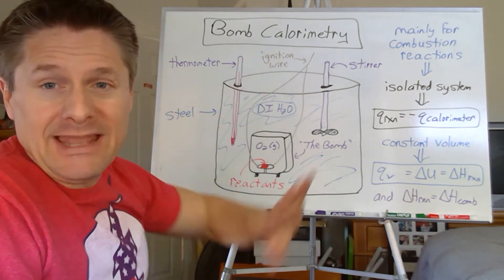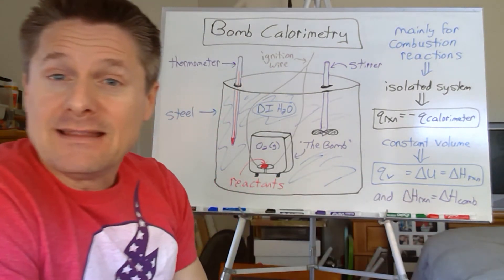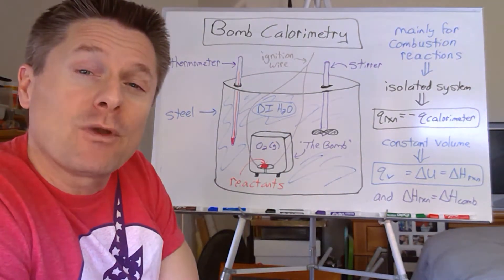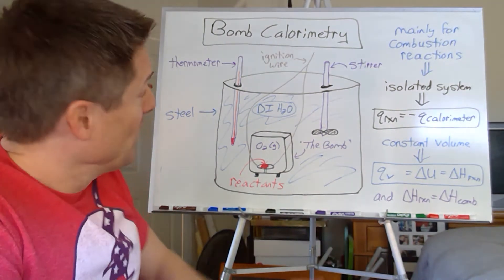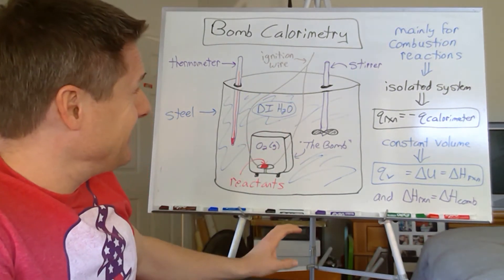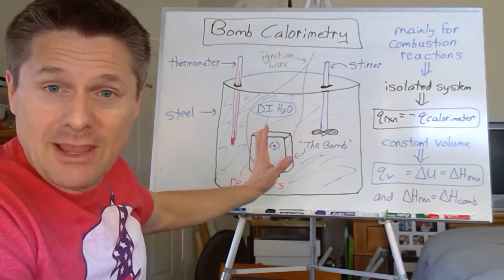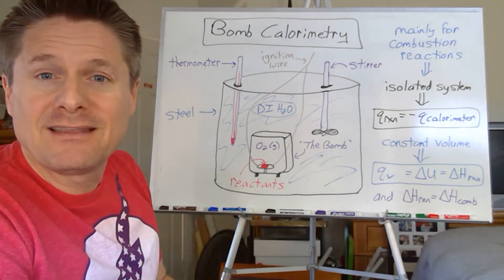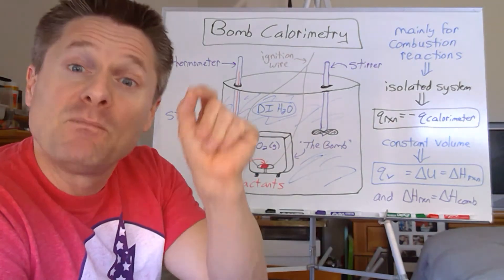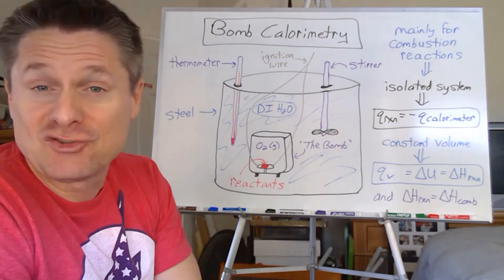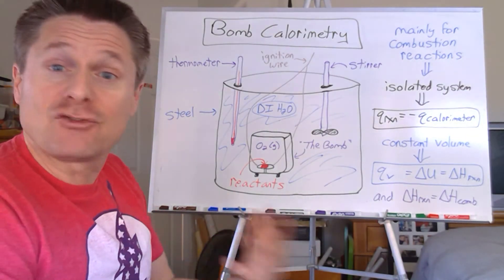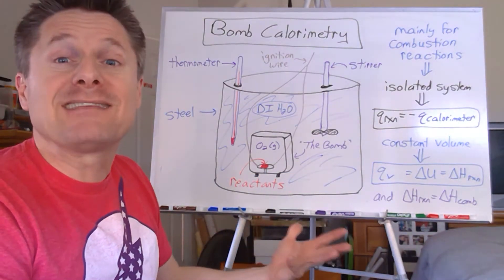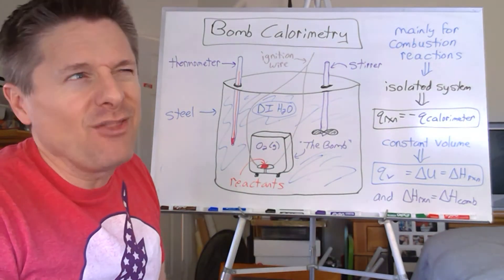How do we get information from this to determine the heats of combustion at constant volume? We need something called the heat capacity. Because the calorimeter comes from the manufacturer and as long as you use the same amount of water, the mass and the bomb are constant. We can combine the mass and the specific heat and just call that the heat capacity C. That's given to us by the manufacturer - it makes our calculations a piece of cake.